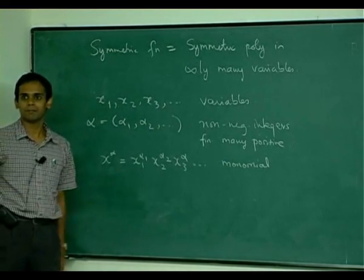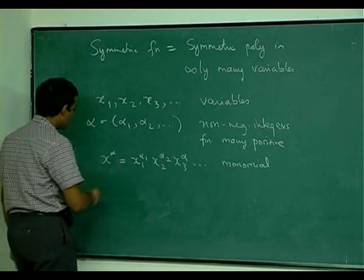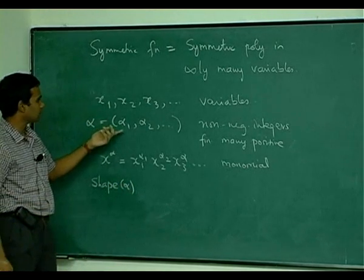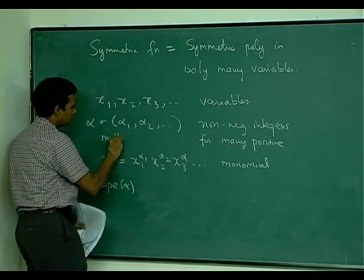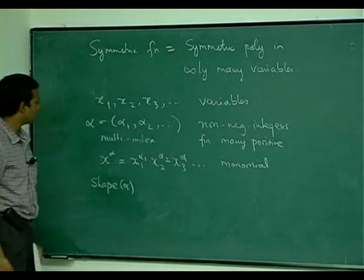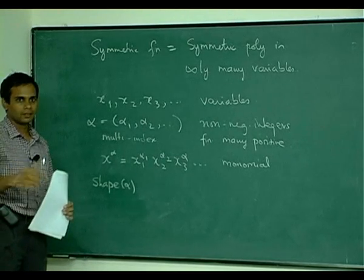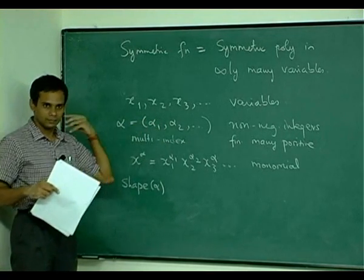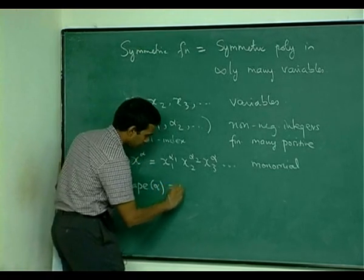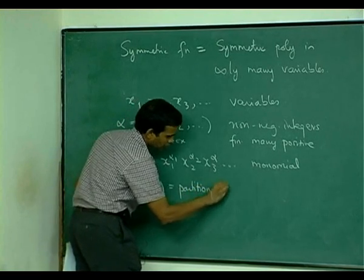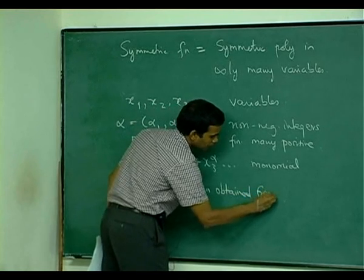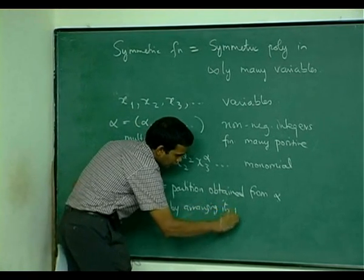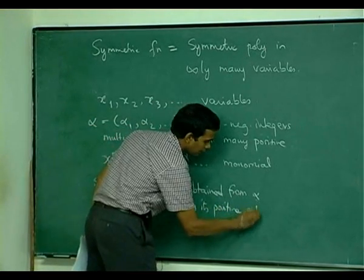You have all these monomials, infinitely many of them. The shape of a monomial starts with the multi-index: you get a partition by rearranging the positive parts of the multi-index in weakly decreasing order. This is the partition obtained from alpha by arranging its positive entries in decreasing order.